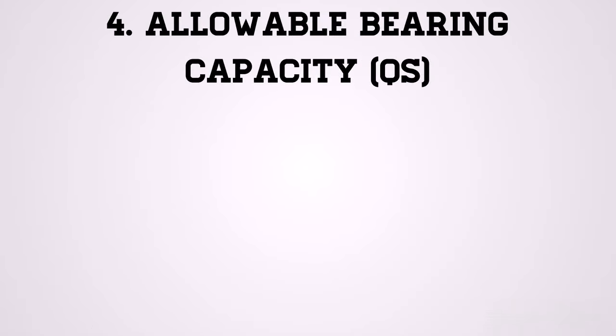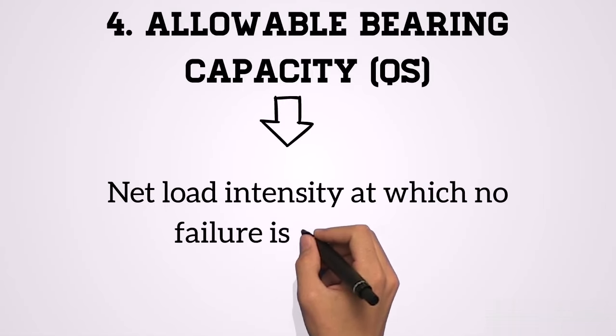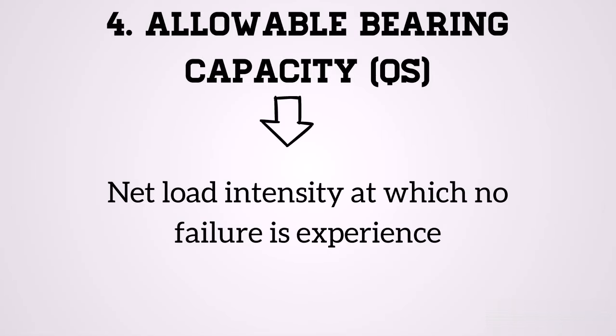Finally, the allowable bearing capacity, designated as QS, is the net load intensity at which no failure is experienced. The allowable bearing capacity is the ultimate bearing capacity divided by a factor of safety. These are the types of bearing capacity of soil.